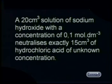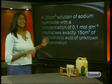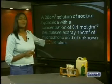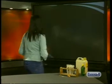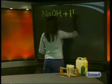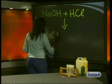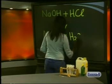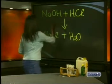A 20 cm³ solution of sodium hydroxide with a concentration of 0.1 mol·dm⁻³ neutralizes exactly 15 cm³ of hydrochloric acid of unknown concentration. We need to find the concentration of the hydrochloric acid. First, write the balanced chemical equation: NaOH plus HCl react to form NaCl plus H2O. From the balanced equation, the ratio of moles reacting is 1 to 1.